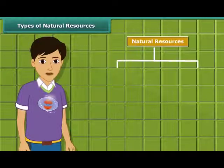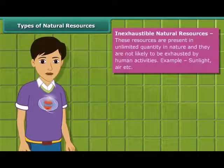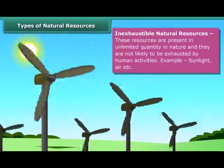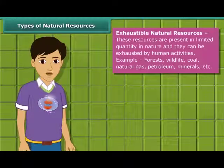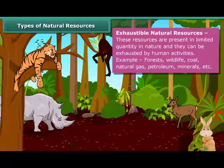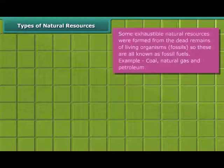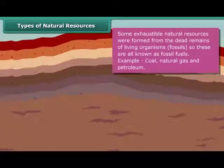Natural resources can be broadly classified into two categories: inexhaustible natural resources and exhaustible resources. Inexhaustible natural resources are present in abundance, and it is unlikely that they will be exhausted by human activity — sunlight and air are examples. Exhaustible resources are limited in amount and can be exhausted by human activities; forests, wildlife, coal, natural gas, petroleum, and minerals are examples. Some exhaustible resources like coal, natural gas and petroleum were formed from the dead remains of living organisms called fossils, and hence are known as fossil fuels.